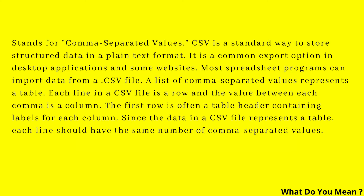A list of comma-separated values represents a table. Each line in a CSV file is a row, and the value between each comma is a column. The first row is often a table header containing labels for each column. Since the data in a CSV file represents a table, each line should have the same number of comma-separated values.